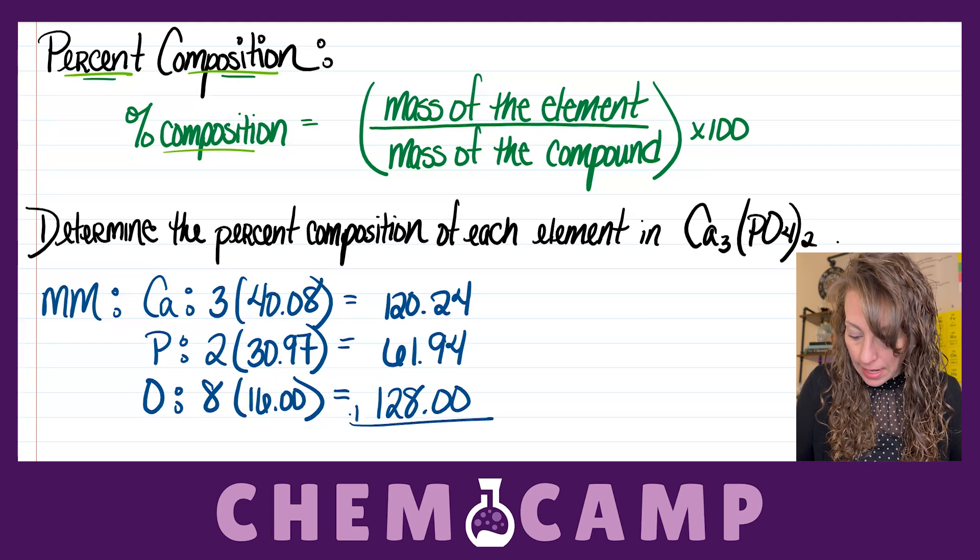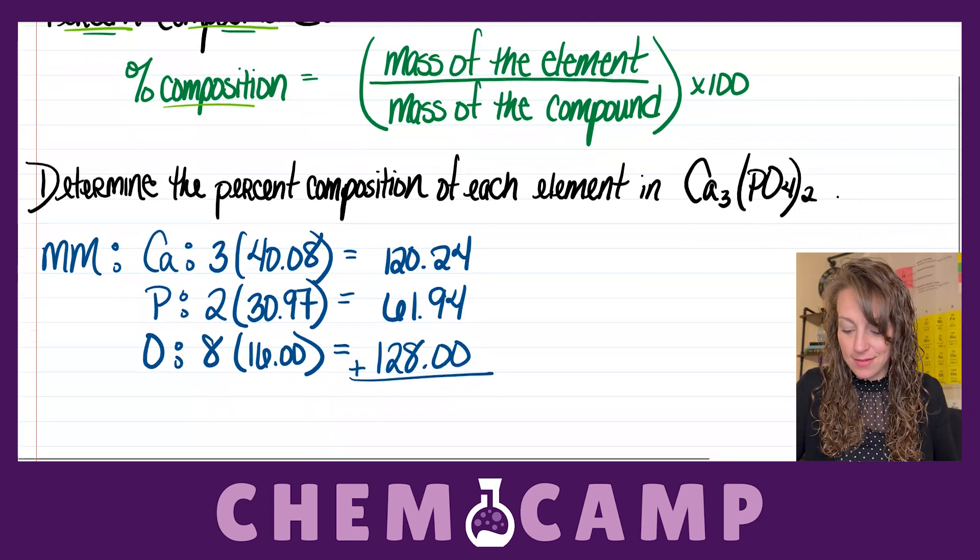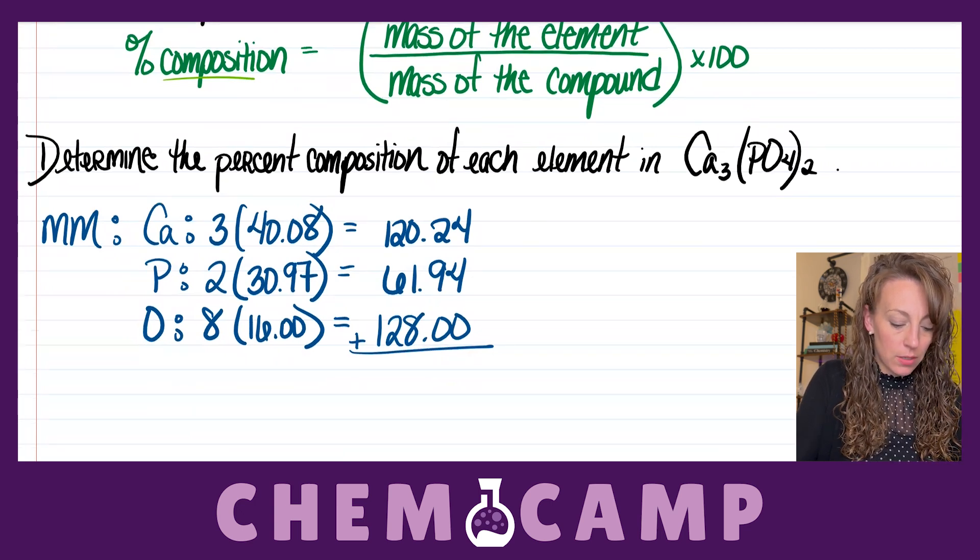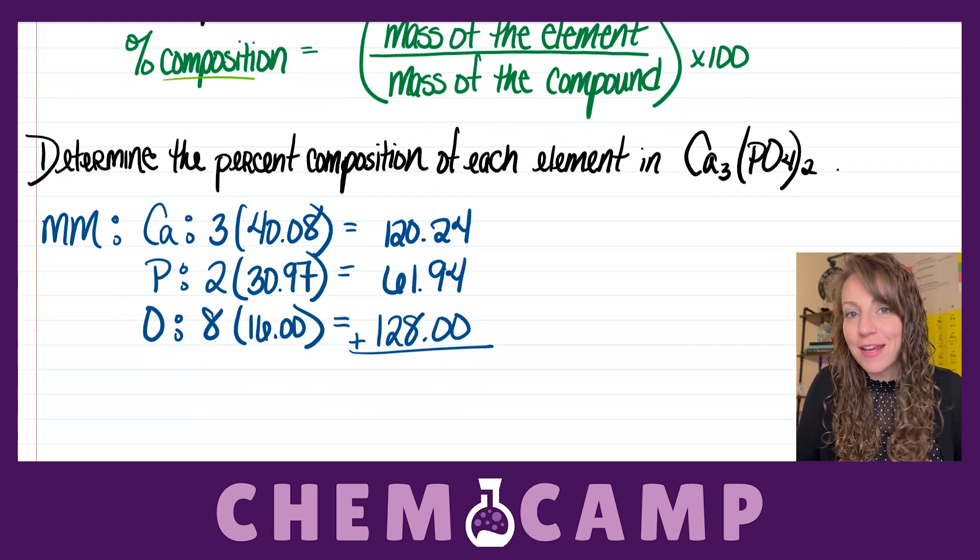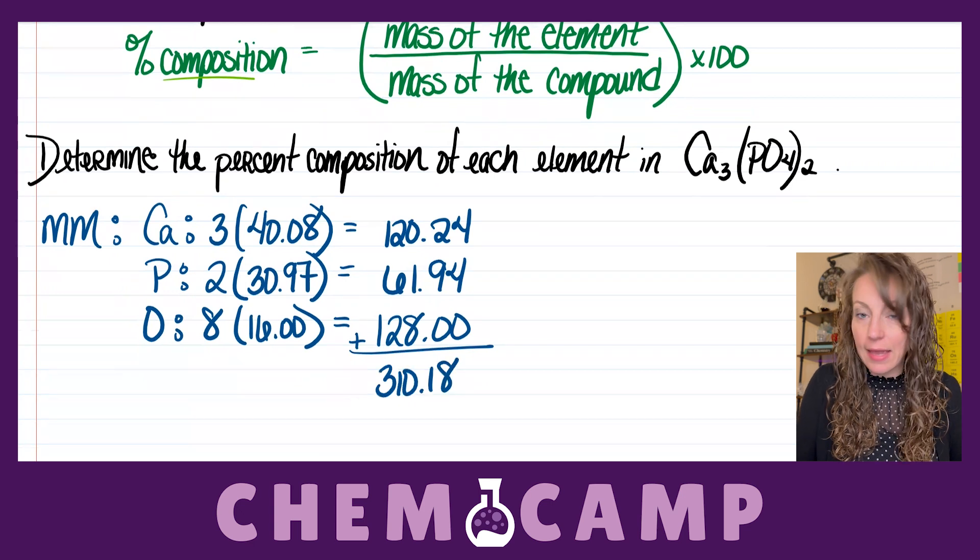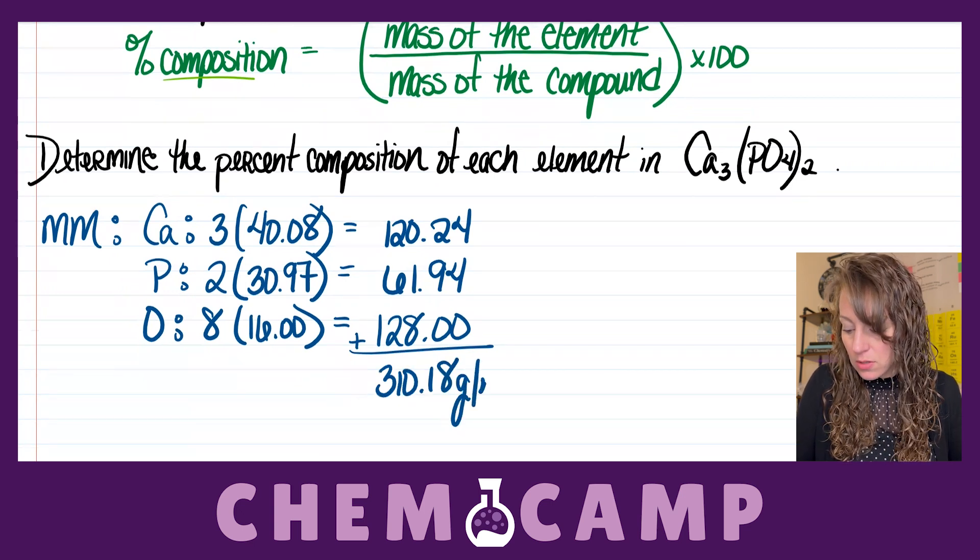And of course, I'm going to add those numbers together. So, 128 plus 61.94 plus 120.24 gives me a grand total of 310.18 grams per mole.